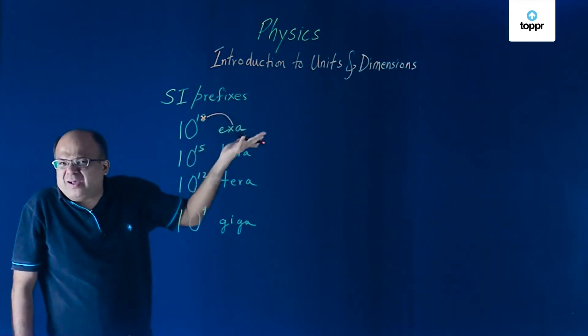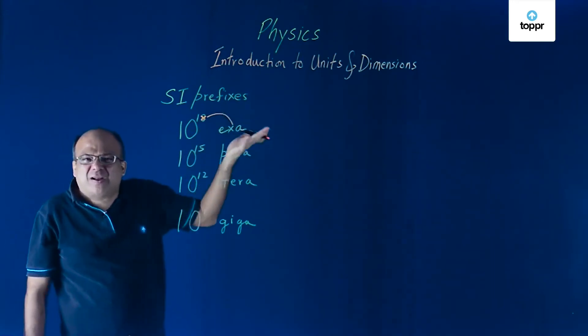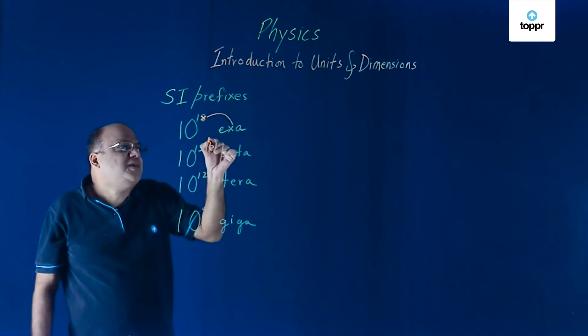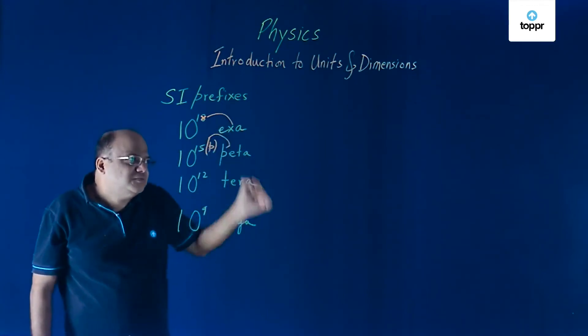5, you know, is PENTA, right? In chemistry, you've got PENTA, VALENT and things like that. 5 pentagon in math. So 5 reminds you of PENTA, P should remind you of PETA.